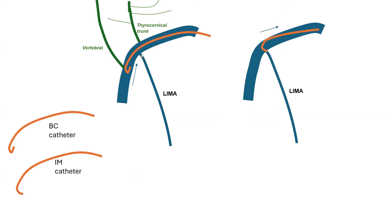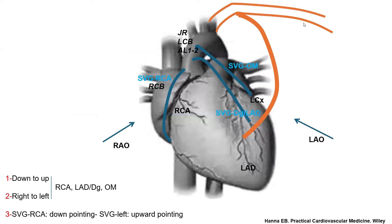Keep in mind that the LIMA is between the vertebral and the thyrocervical trunk, especially close to the thyrocervical trunk, which is looking up, whereas the LIMA is looking down at close to the very same level. After I engage the LIMA, I go into the ascending aorta, engage and image the native coronaries, then image the grafts.